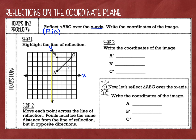All right, let's start reflecting. This is just a matter of counting spaces. Step two: we're going to move each point across the line of reflection, and the points must be the same distance from the line of reflection but in opposite directions. So if point A starts out being one space to the right of my line of reflection, then the image of point A is going to be one space to the left. And we're just going to put our little apostrophe there. If point B is one space to the right, then point B prime will be one space to the left.